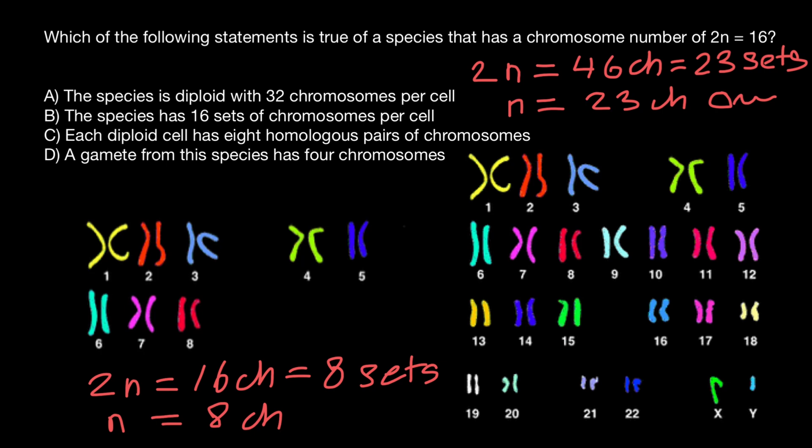Now let's check the answers. The species is diploid with 32 chromosomes per cell. This is not true. Total number of chromosomes, if 2N equals 16, would be 16, because you have to pay attention to chromosomes, not chromosome pairs, but chromosomes.